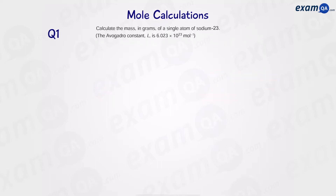Let's start with question one. I recommend you pause the video at the start of every question and have a go yourself. In this question, we want to work out the mass in grams of a single sodium atom. We can use the equation: number of moles is equal to mass over Mr. We know the Mr of sodium — it's 23.